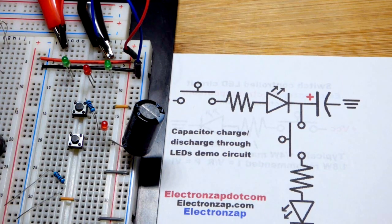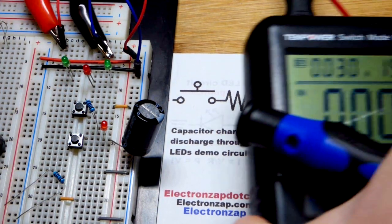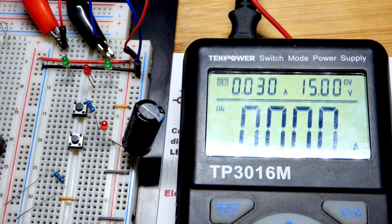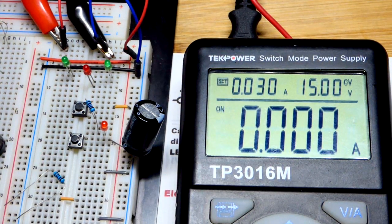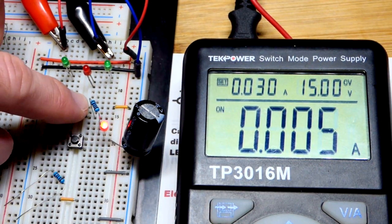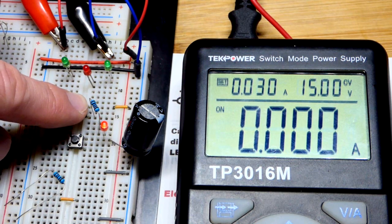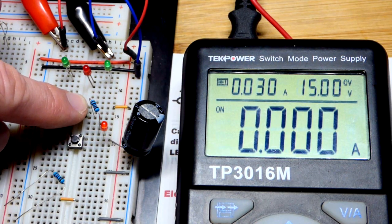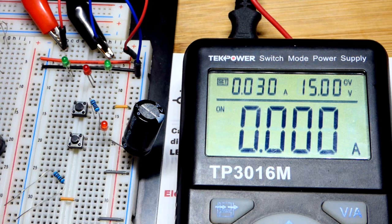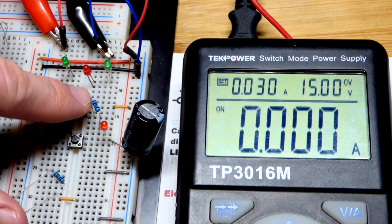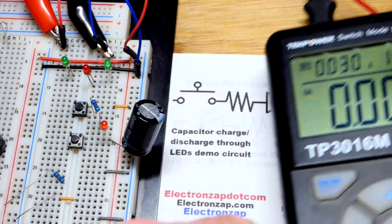So right now, I have the power supply set to 15 volts. Because as you can see there, we'll charge this. You can see that current quickly went down. Now that we got it charged, we can't do anything. Let's get on to discharging it.